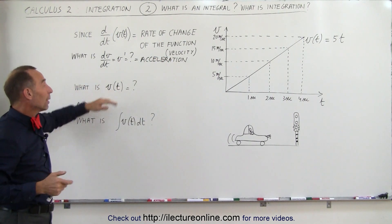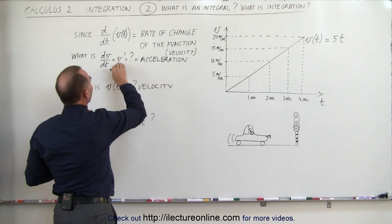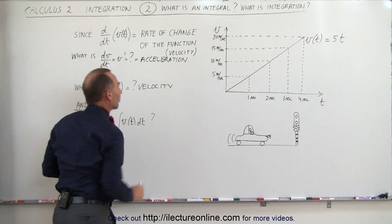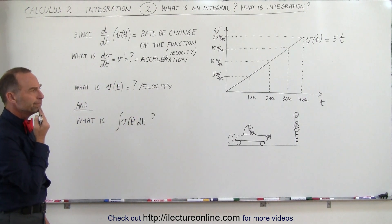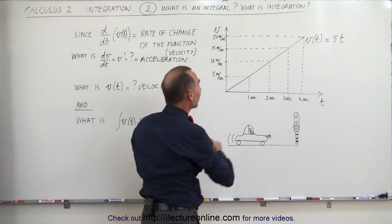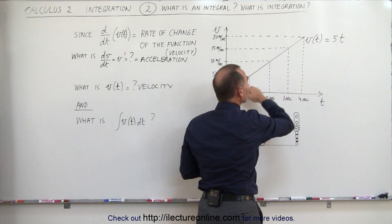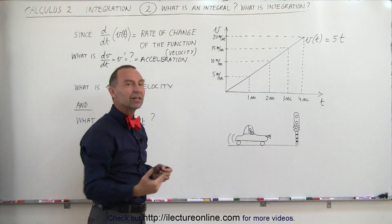The function v(t) represents velocity. The derivative of velocity represents acceleration. Now, the question is, what does the integral of the function represent? The integral of the function, and we'll see that later, really represents the area underneath this curve. And the area underneath this curve represents how far the vehicle has traveled.